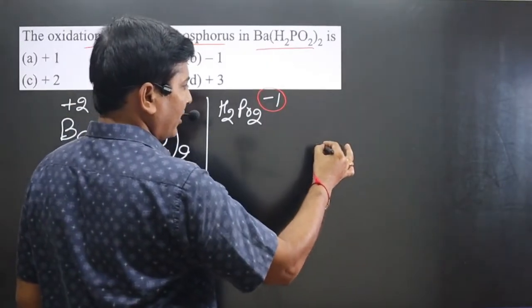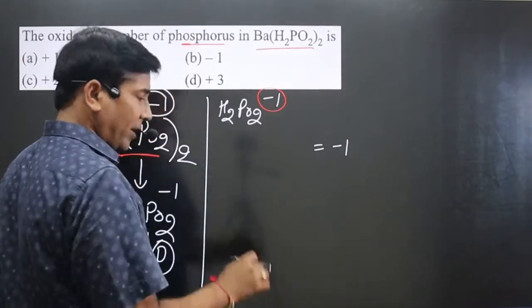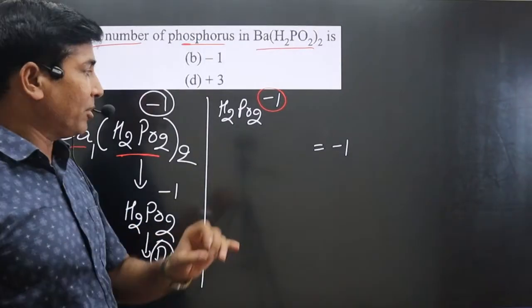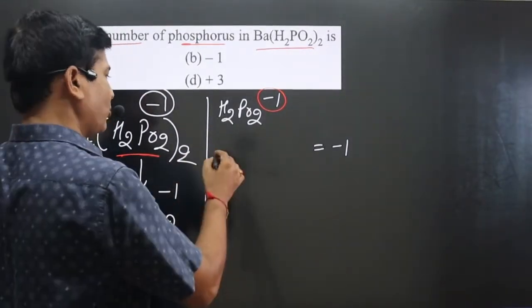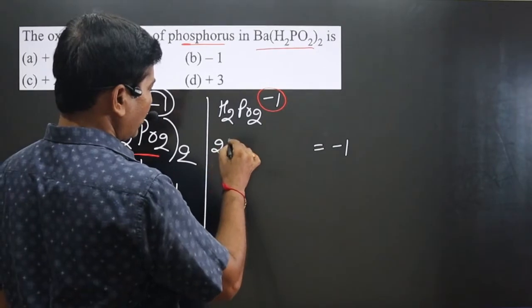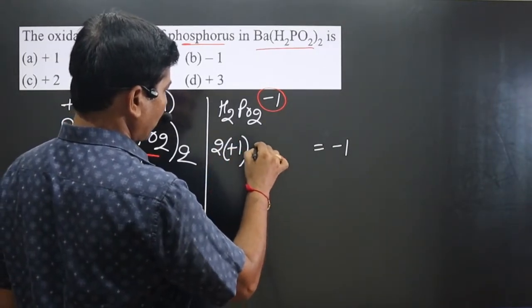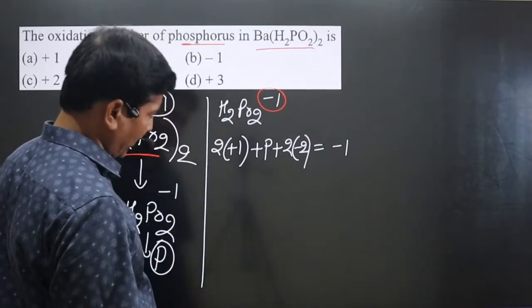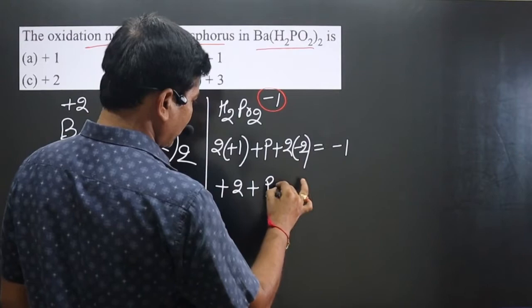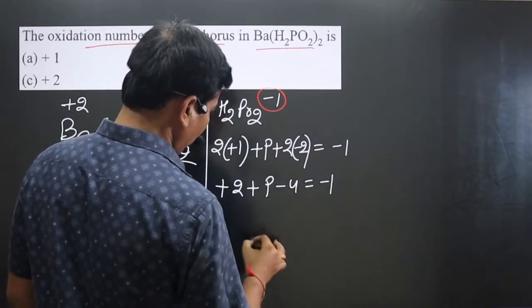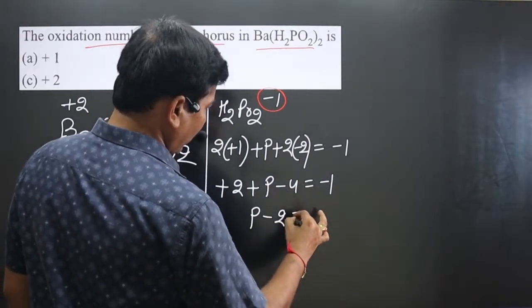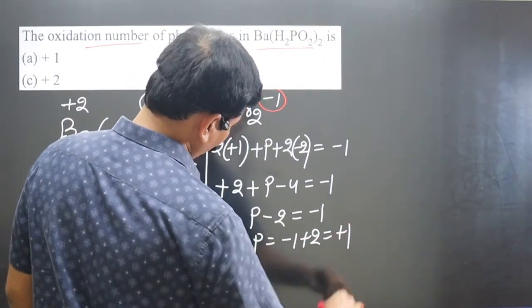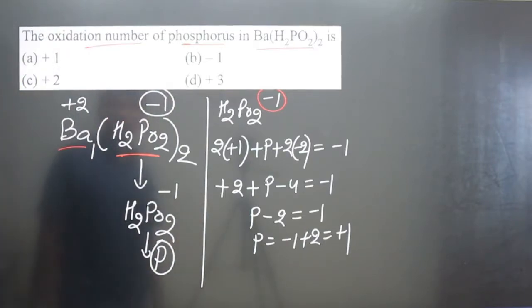We have H₂PO₂ with a charge of minus one — this is a polyatomic ion, so the total charge equals minus one. Hydrogen attached to phosphorus, a non-metal, shows a plus one oxidation number. There are two hydrogens, each +1; then phosphorus; then two oxygens, each −2. So: +2 + P − 4 = −1, giving P − 2 = −1, therefore P = +1.